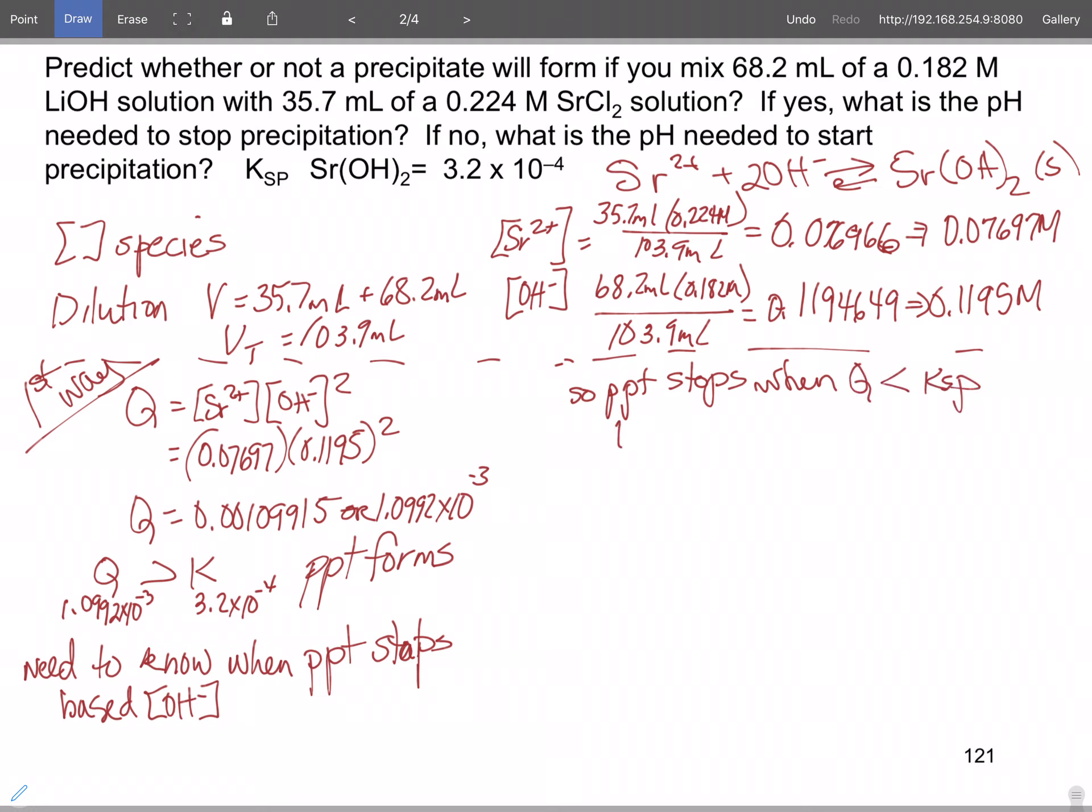So that means your Ksp is going to have to be greater than your strontium times your hydroxide squared. So our Ksp is 3.2 times 10 to the minus 4th is going to be greater than 0.07697 times the hydroxide concentration squared.